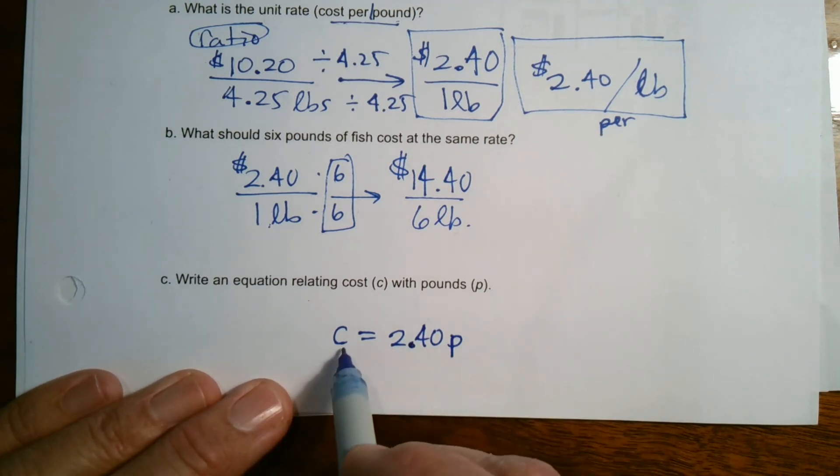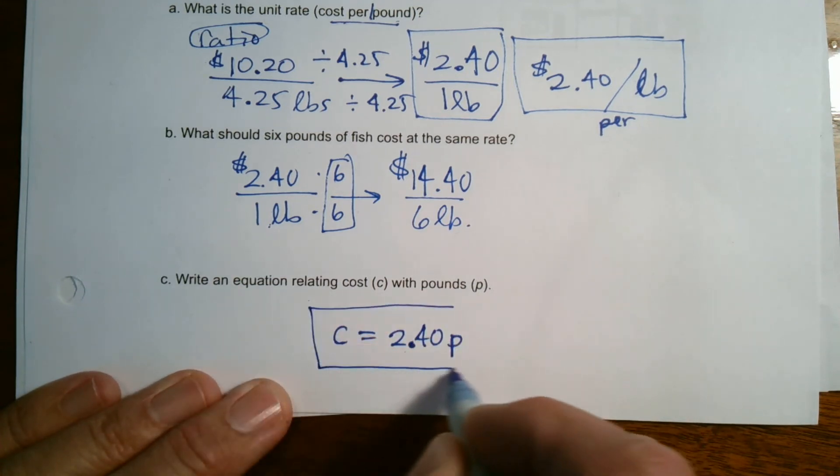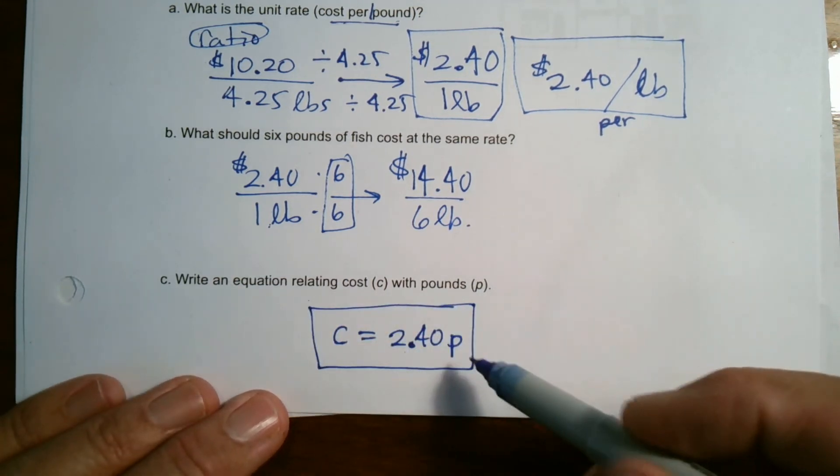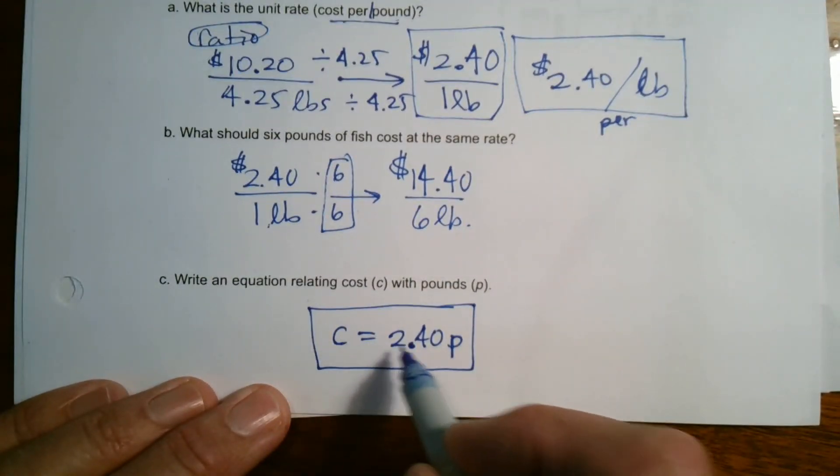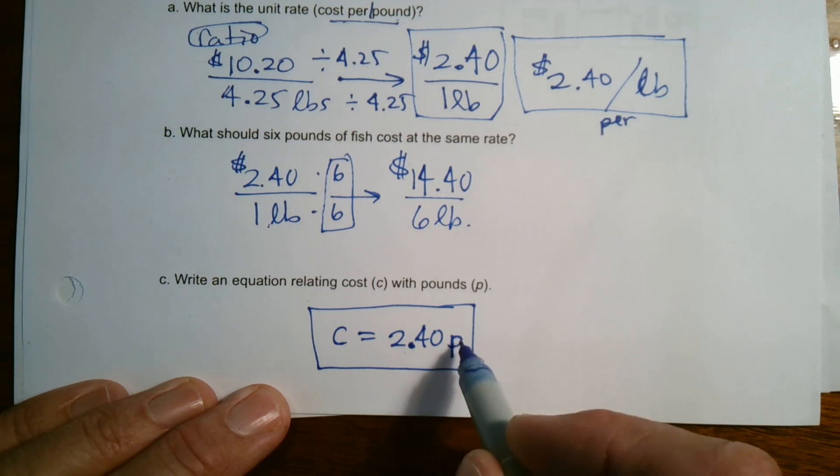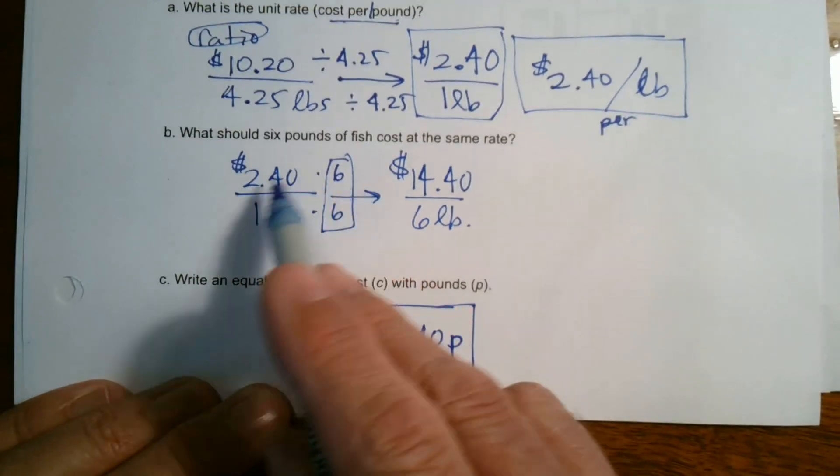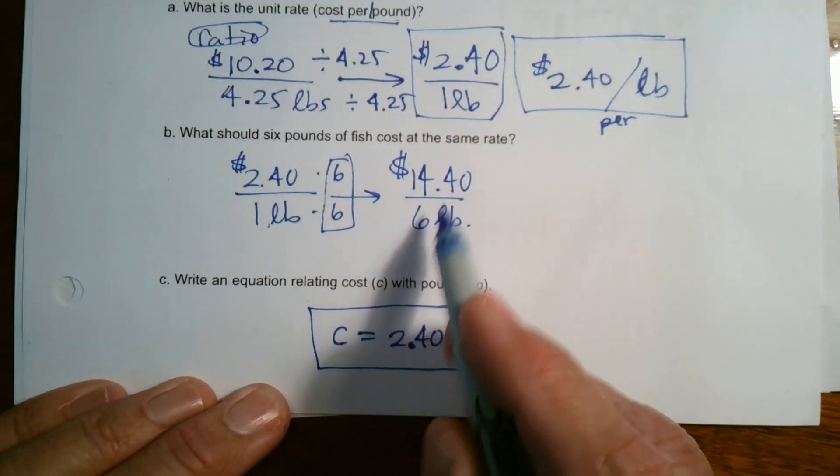So my equation here would be the cost is equal to $2.40 times every pound, right? My cost is $2.40 times every pound. So that would be the equation that would represent this situation. The cost is equal to $2.40 times every pound. If it's one pound, $2.40. If it's six pounds, multiply six. That's what we did. Six times $2.40 and got $14.40.